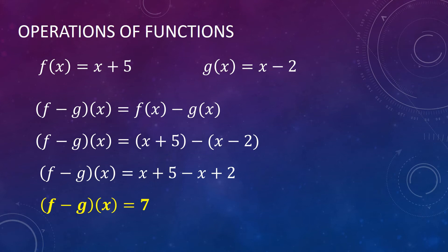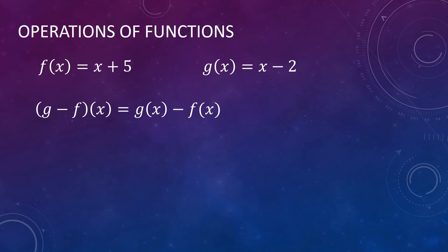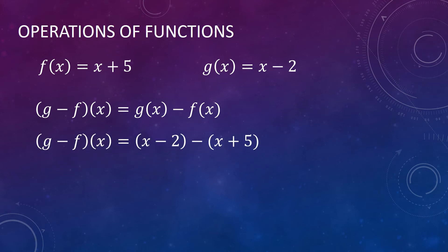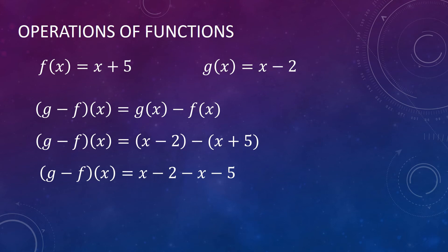Take note that f minus g of x is not the same as g minus f of x. Let us now do g minus f of x, or g of x minus f of x. Our first function now will be g of x, which is x minus 2, minus f of x, which is the quantity x plus 5. The negative sign is distributed to the f of x, so this becomes x minus 2 minus x minus 5, which gives us a difference equal to negative 7.